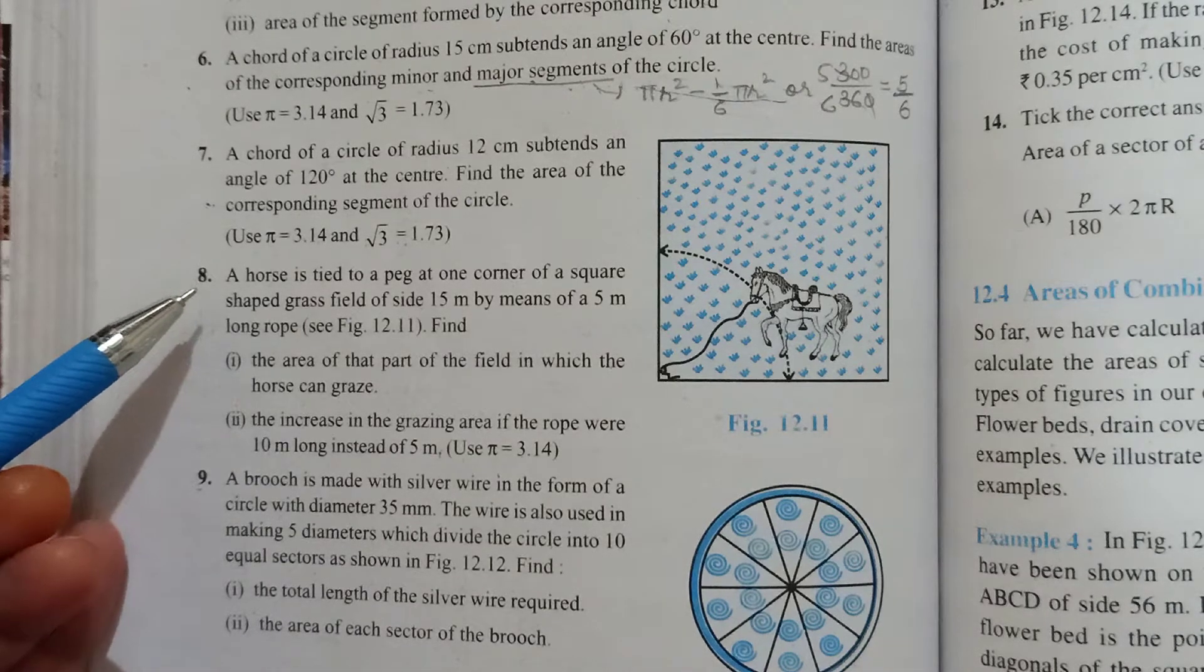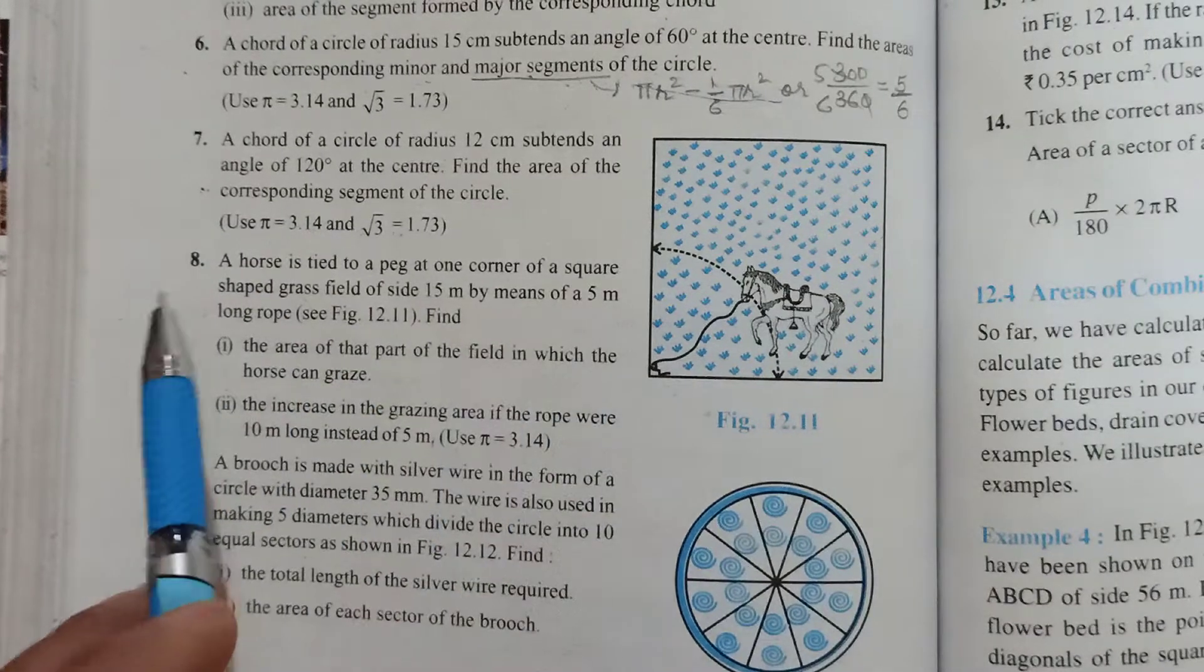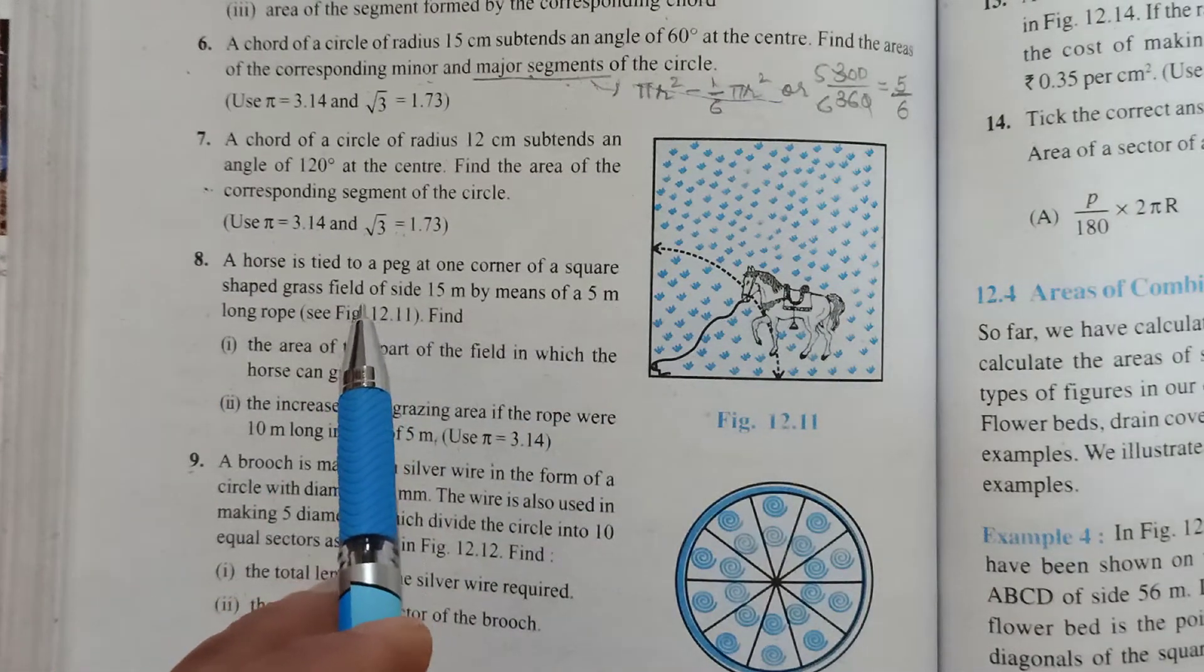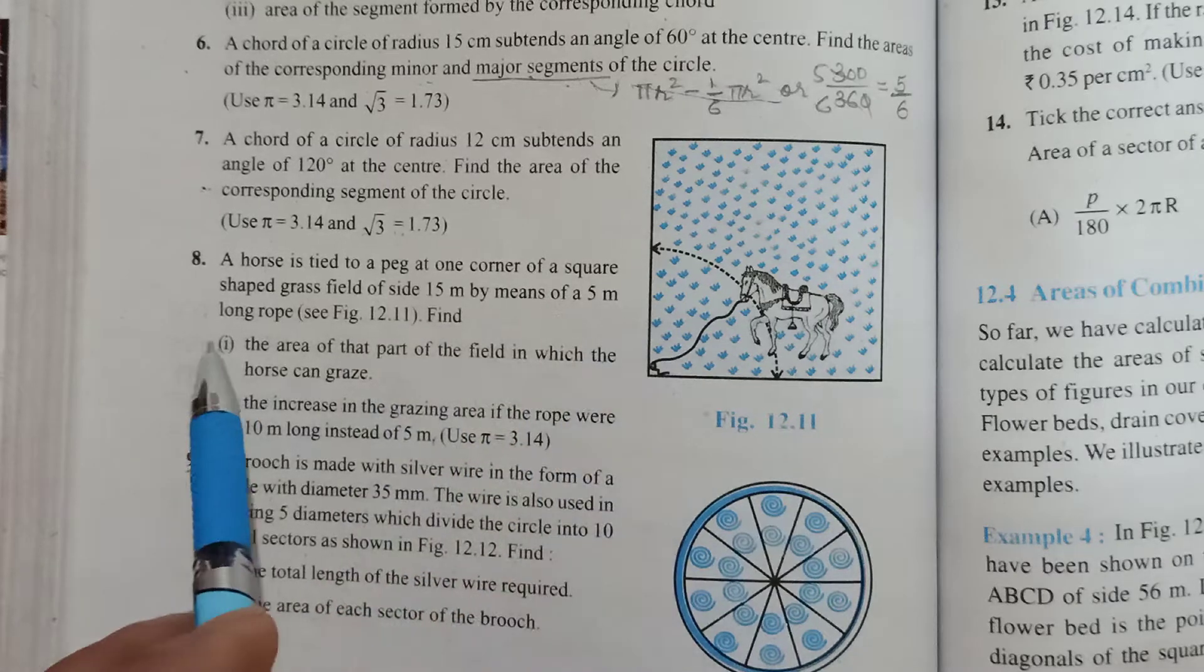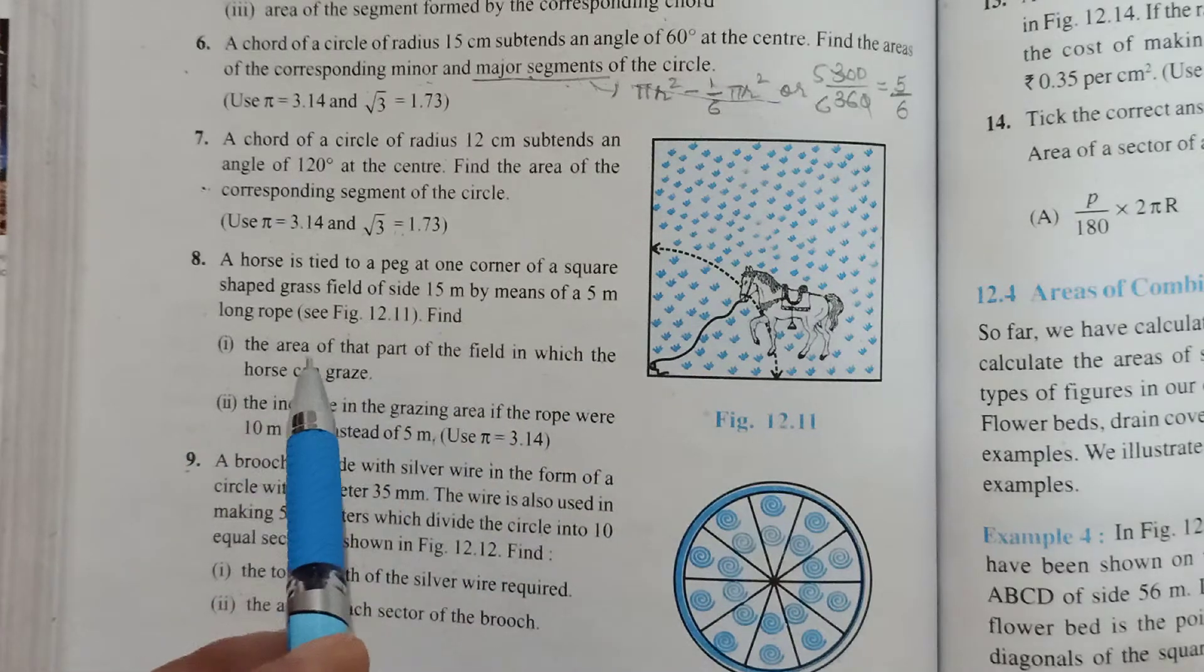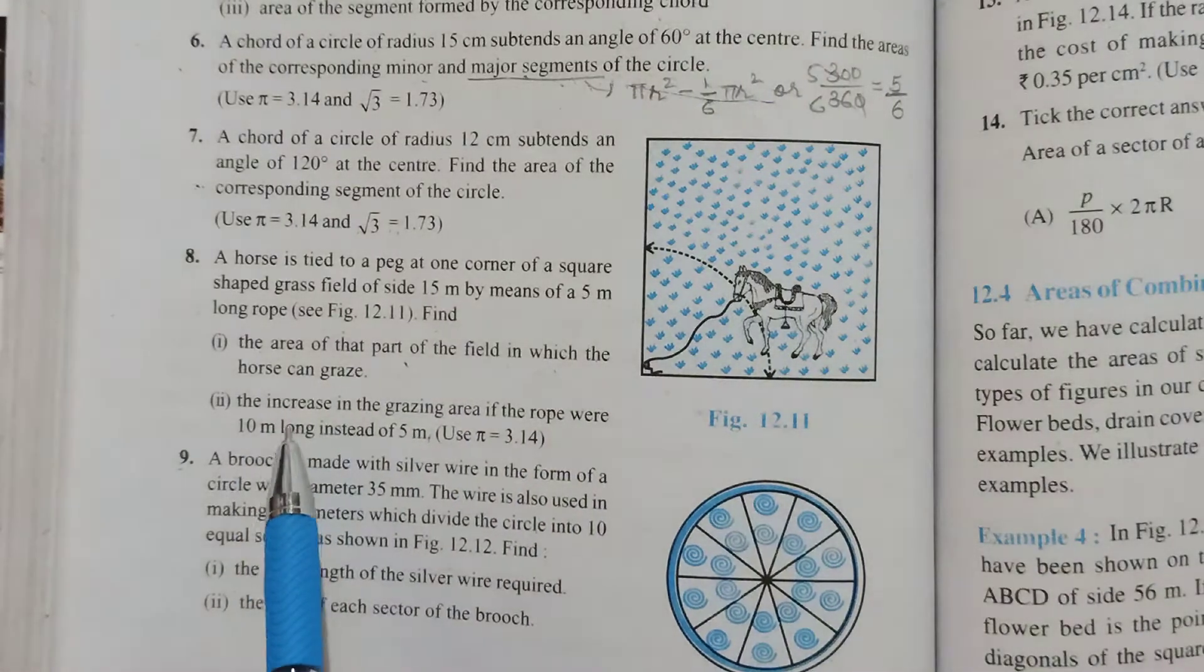We start with question number 8. A horse is tied to a peg in one corner of a square-shaped grass field of side 15 meters by means of a 5 meter long rope.